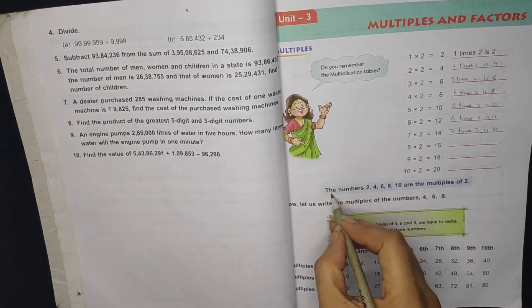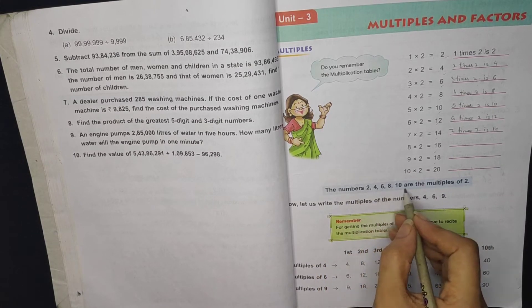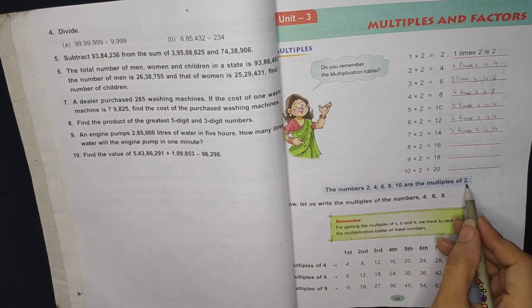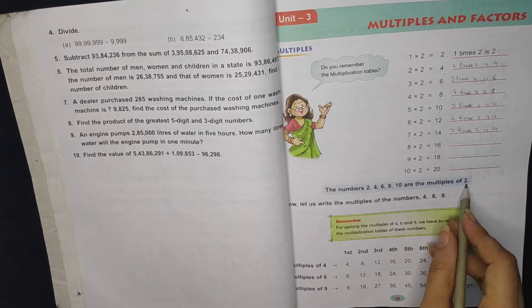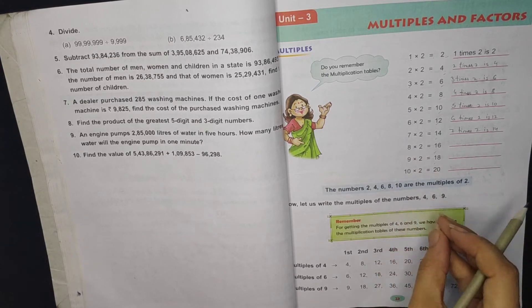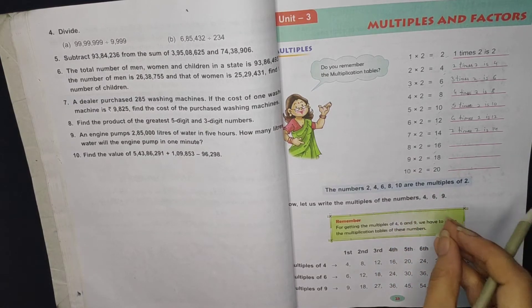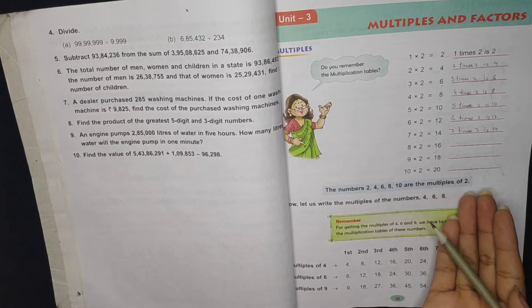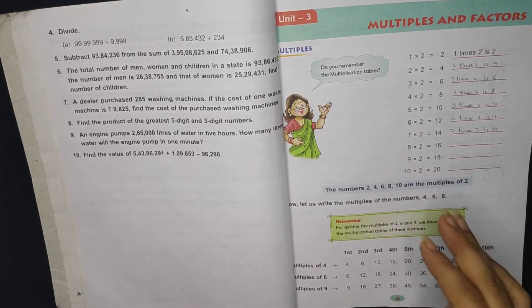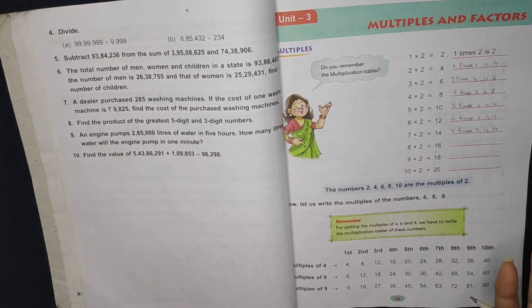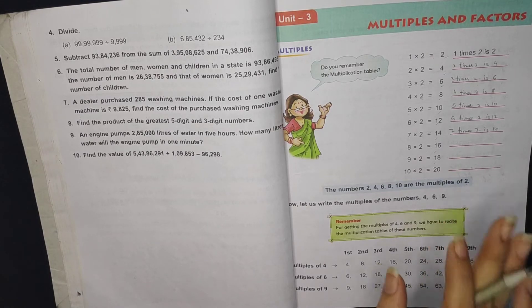So, see what is written? The numbers 2, 4, 6, 8, 10 are multiples of 2. So what do we have to write a multiple? We have to write a table. We have to write that number with another number or multiply ourselves. Then what will we have? Multiples of 4.